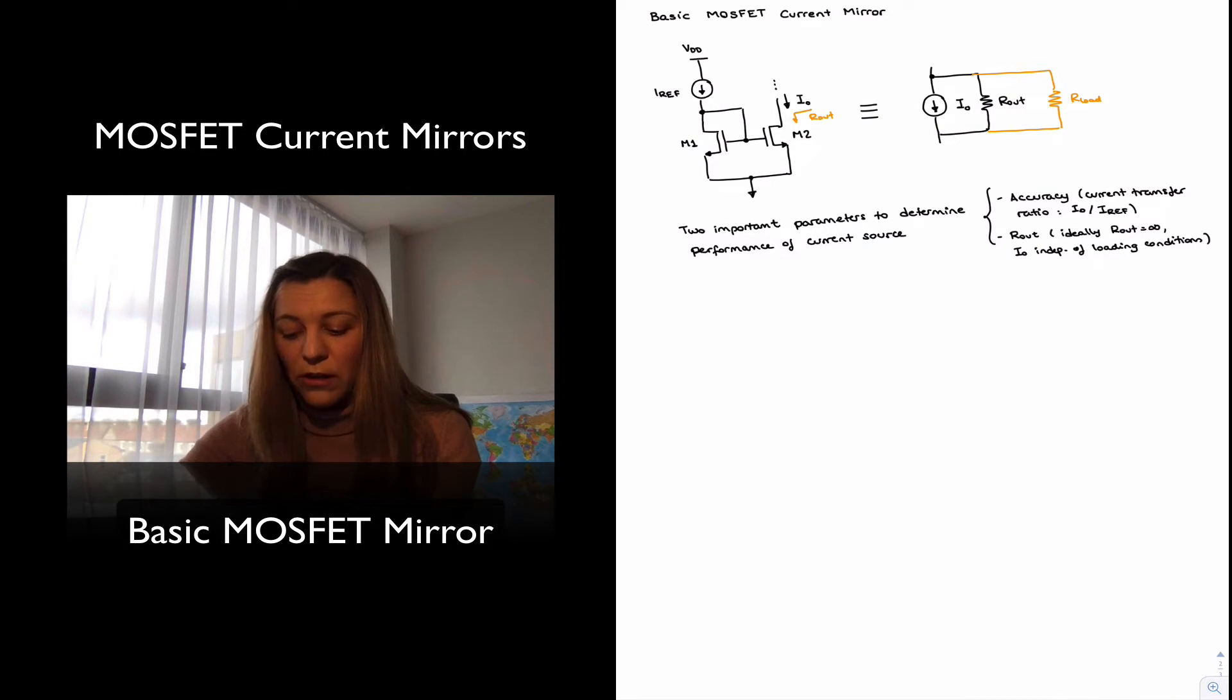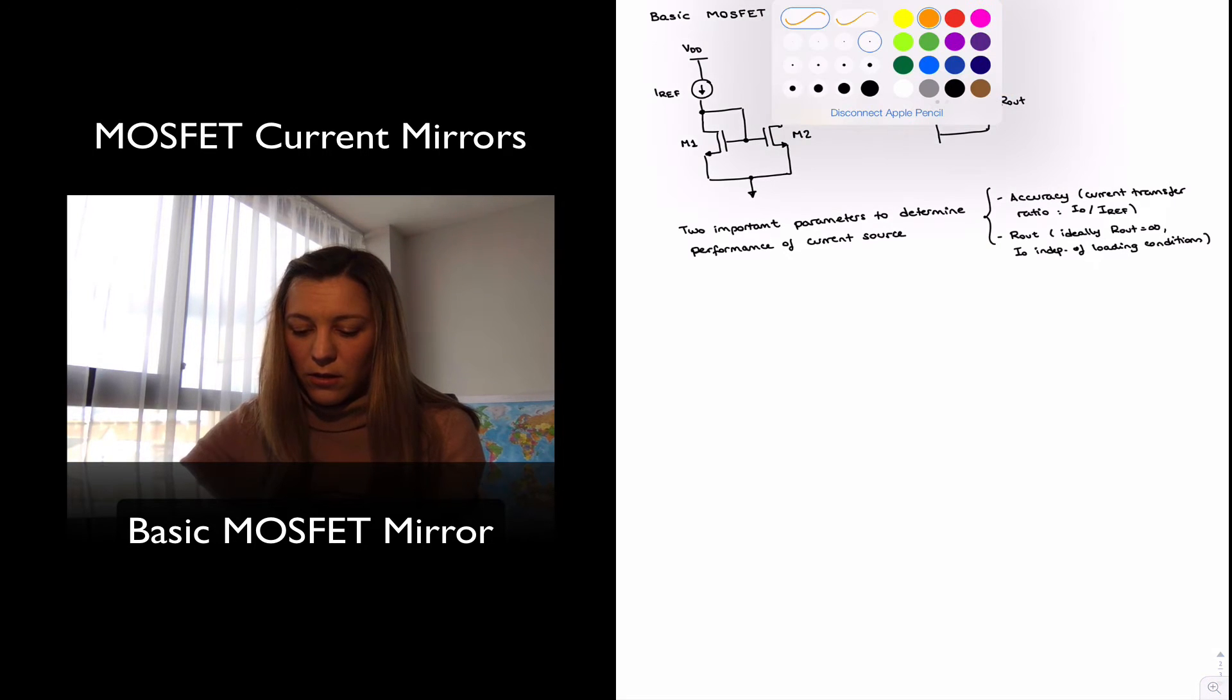I want the full value of I out to flow through R load. And that's only going to happen when my R out is equal to infinity, or an open circuit. If R out has a finite value, then what I'm going to have is a current division. Whereas the smaller the value of R out, the more of the current is going to flow through R out, and the less current I'm going to get through my load. So ideally, if it's infinity, my current flowing through the load will be independent of the loading conditions.